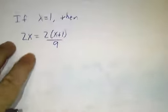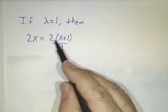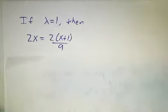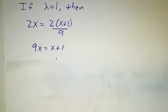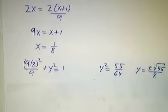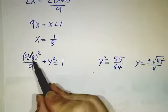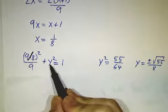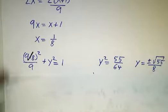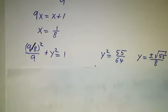If lambda equals 1, then our first equation said that 2x is 2x plus 1 over 9 times lambda. So that's 2x plus 1 over 9. You multiply both sides by 9 halves and you get 9x equals x plus 1. So x equals an eighth. And then we plug in our equation, x plus 1 is 9 eighths. So x plus 1 squared over 9 plus y squared equals 1. And we solve for y and we get a number.